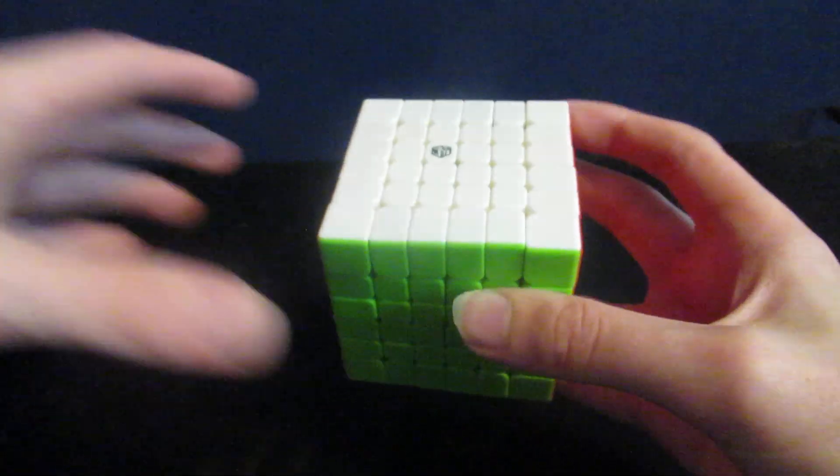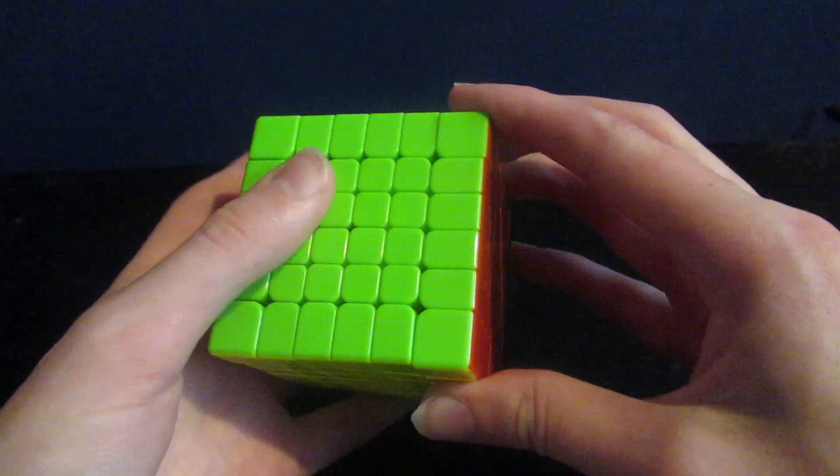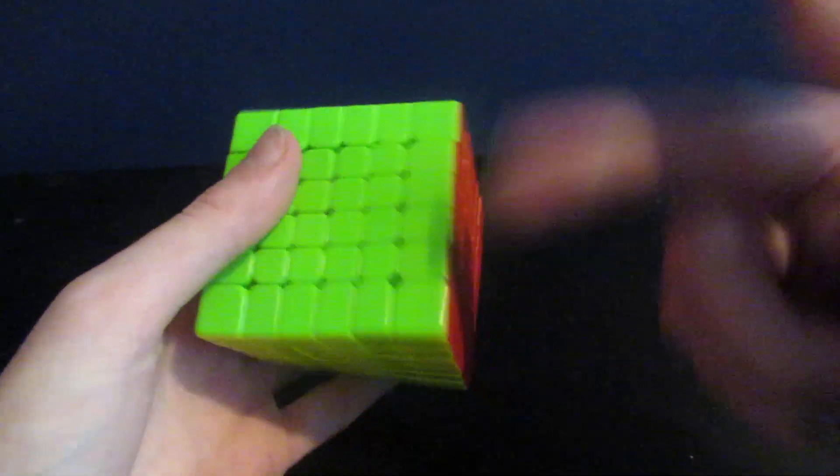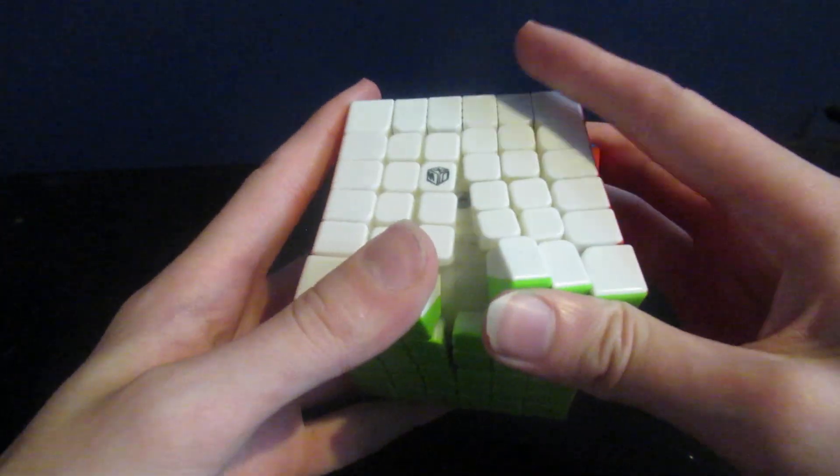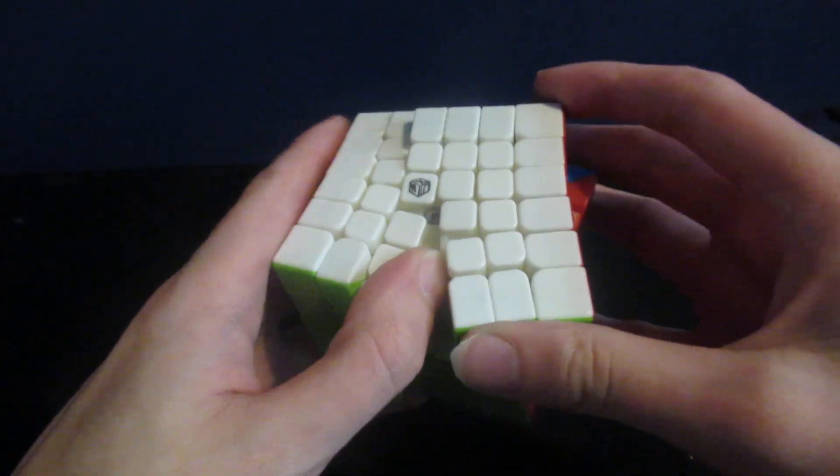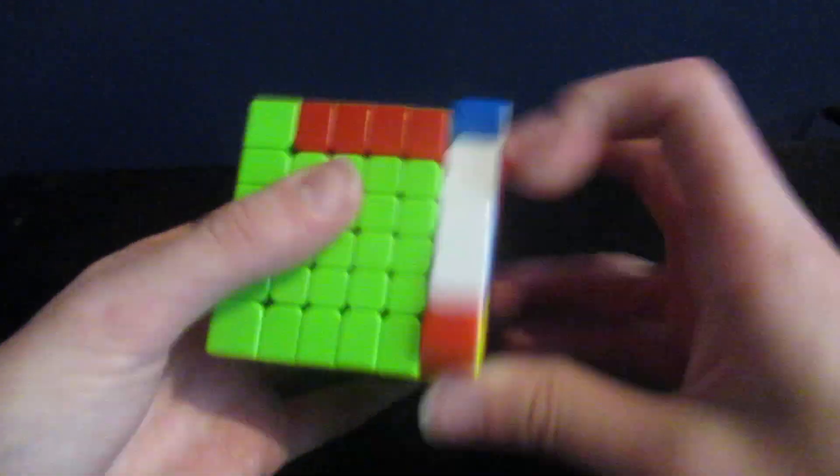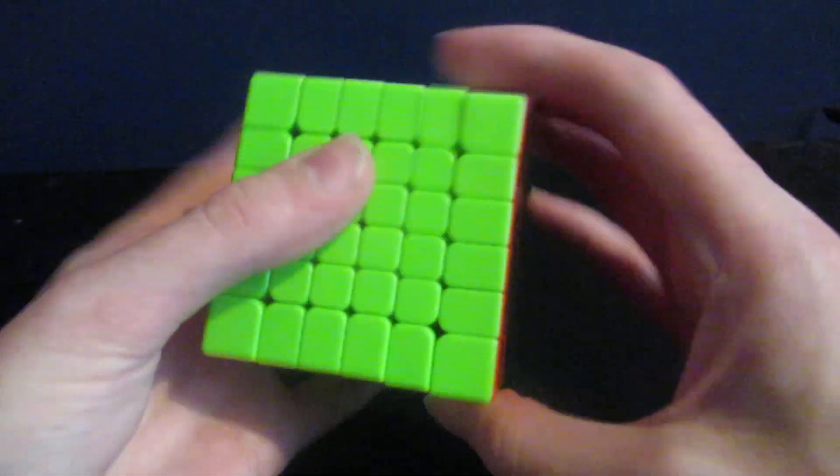For 6x6 my best cube is a Shadow v2, but I hope to borrow someone else's Aoshi or MGC. My only goal is to make cutoff, which means a sub-4 single. It is possible on this cube but it would be a lot more doable if I had someone else's cube. I also don't practice 6x6 because it takes too long.